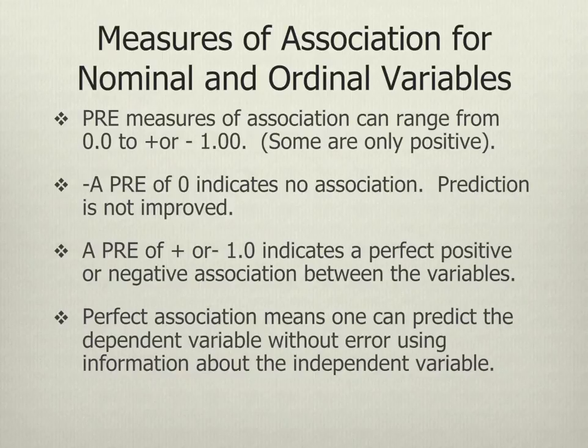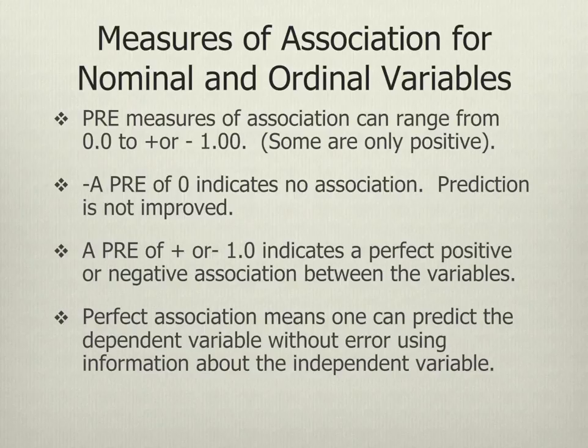PRE measures generally range from zero to the absolute value of one. Some measures only range from zero to one — if a nominal variable is involved, you can't have a direction. If you have two ordinal variables, your measure of association might range from negative one to positive one. The closer the value is to zero, the weaker the association. The closer the value is to either negative or positive one, the stronger the association. A PRE of zero indicates no association at all. A PRE of plus or minus one indicates perfect association, meaning you would be correct 100% of the time using the independent variable to predict the dependent variable.